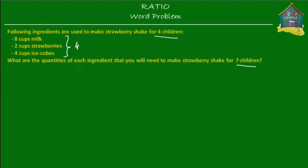Here I'm going to use a few of them. First of all, let's draw a model diagram and try to understand this problem. We have eight cups of milk that we will need for four children, so let's draw that eight cups of milk.